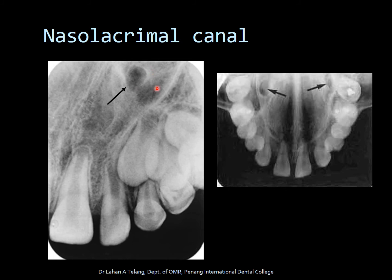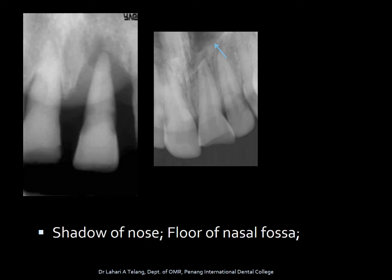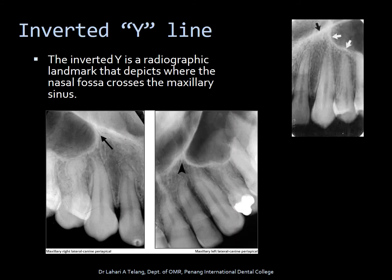The nasolacrimal canal is well-defined but very rarely seen on a canine radiograph; it is more clearly evident on the occlusal view. The shadow of the nose and the floor of the nasal cavity are also evident on some radiographs. Interestingly, you can also see the inverted Y line — a radiographic landmark depicting where the nasal fossa crosses the maxillary sinus. You can see the nasal fossa and the floor of the maxillary sinus crossing to give the appearance of an inverted Y.